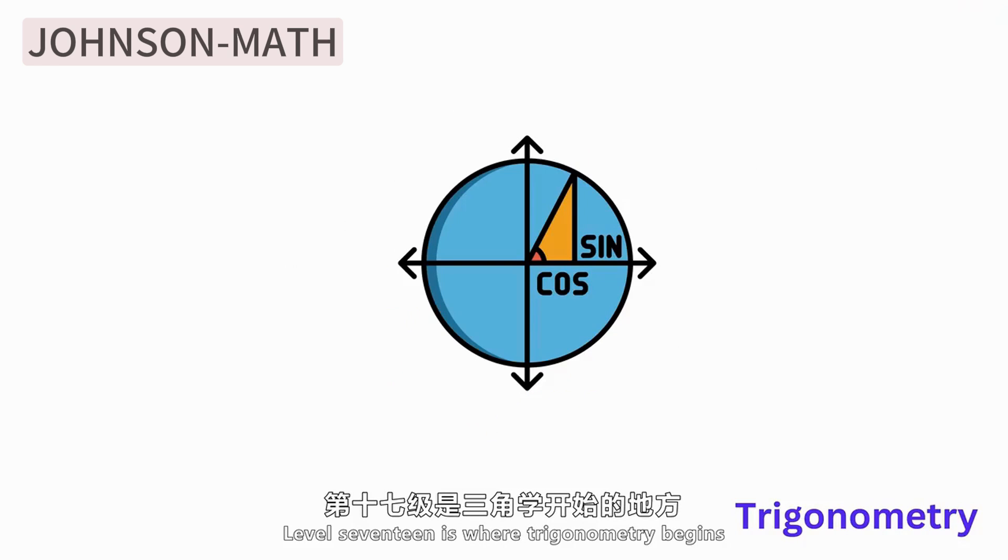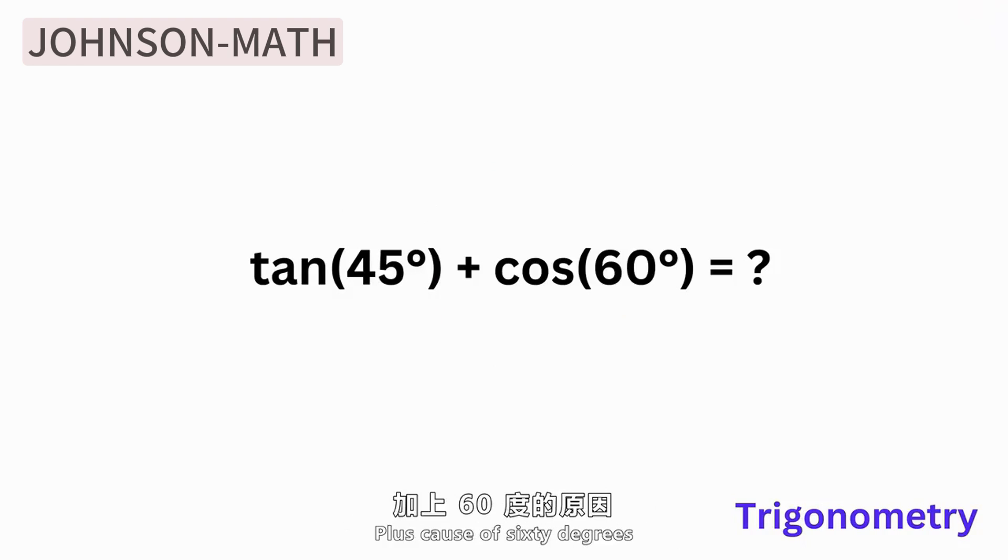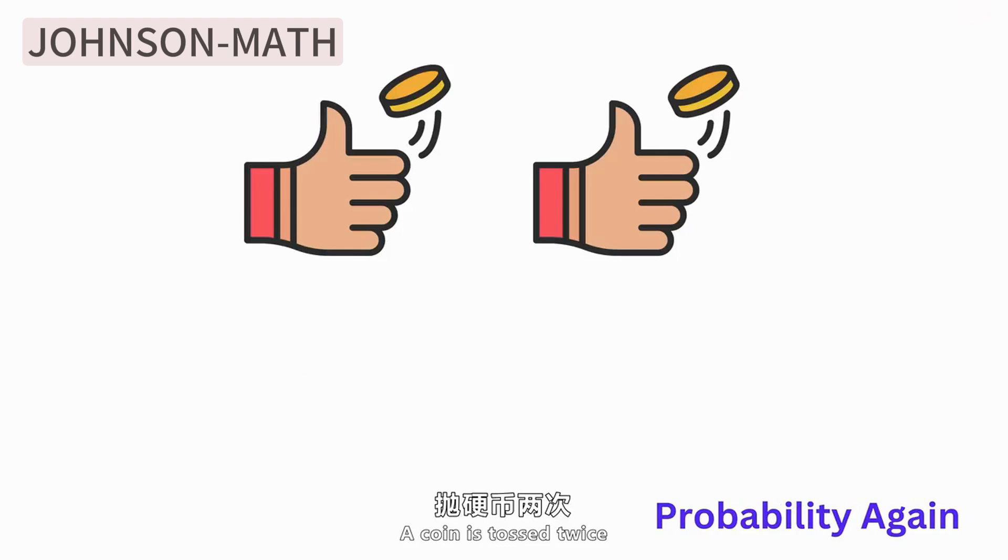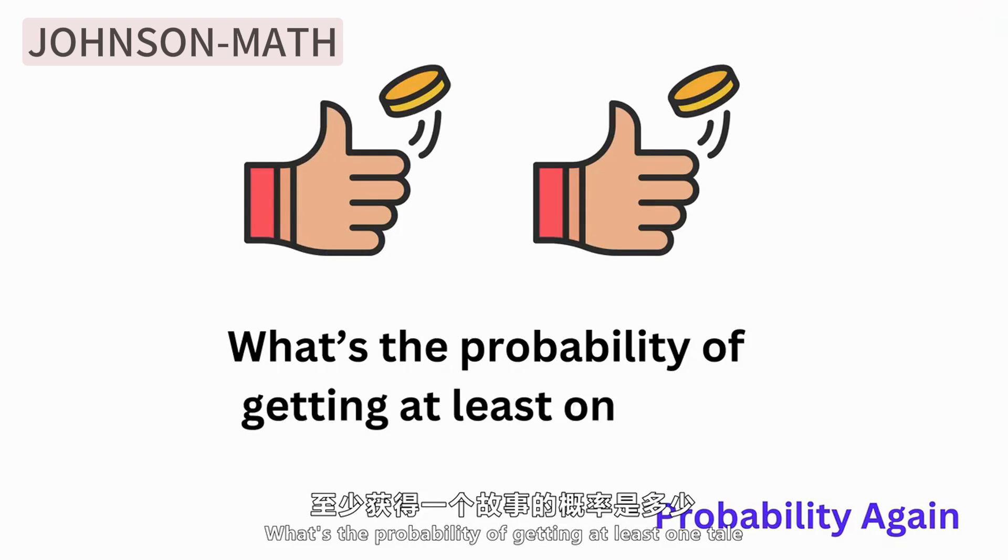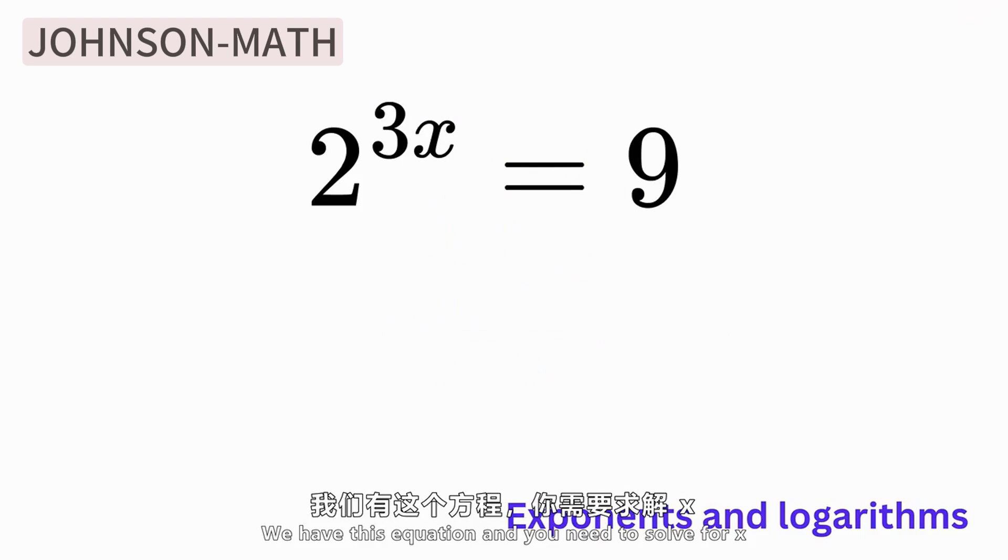Level 17 starts to involve trigonometry. Tangent 45 degrees plus cosine 60 degrees, what is the value? Level 18, let's delve into probability. A coin is tossed twice, what is the probability of getting at least one tail? Level 19, say hello to exponents and logarithms. We have this equation, you need to solve for x.